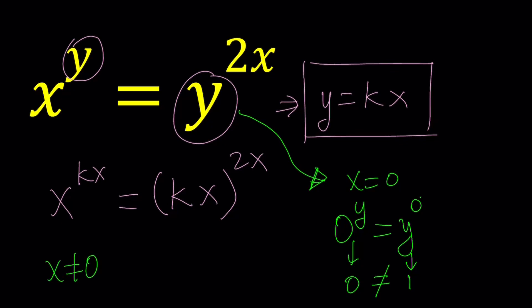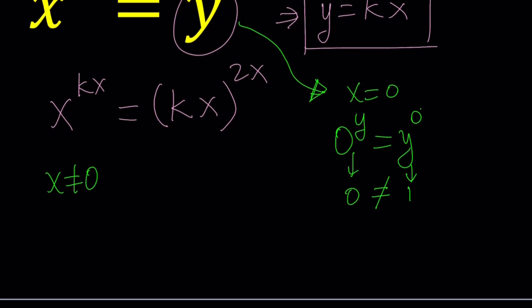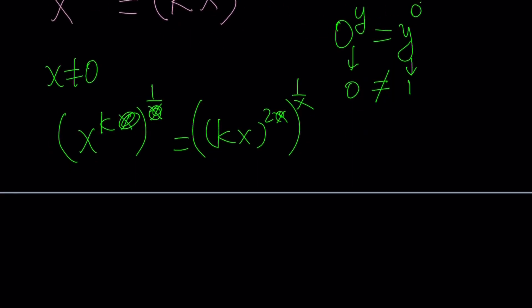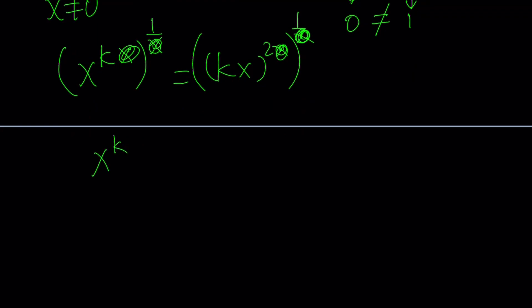If x does not equal zero, then we can do the following. We have x to the power kx. We can raise it to the power one over x, which is going to cancel out the x. And then we can do the same thing on the right hand side. So let's raise both sides to the power one over x, and this x is going to cancel out. So we end up with x to the power k equals kx to the second power.